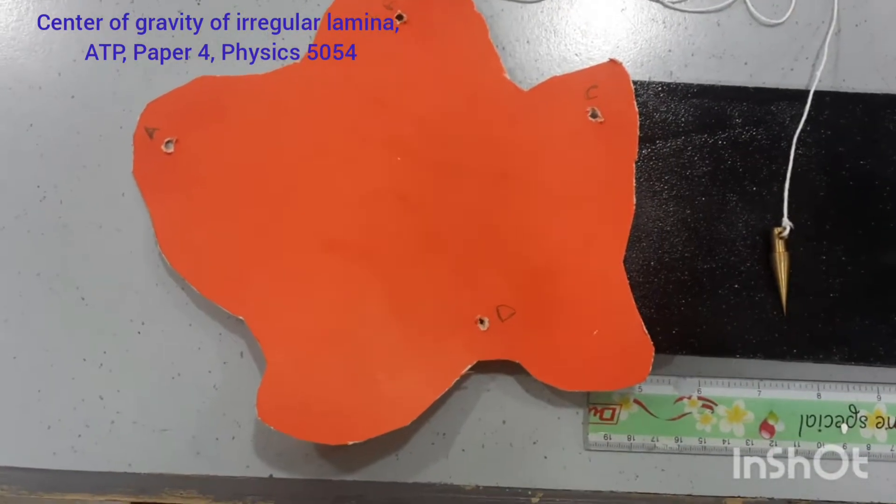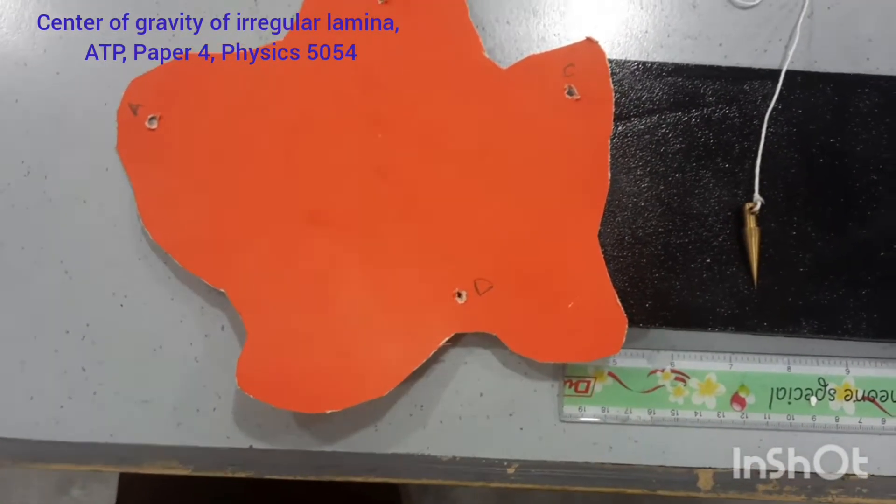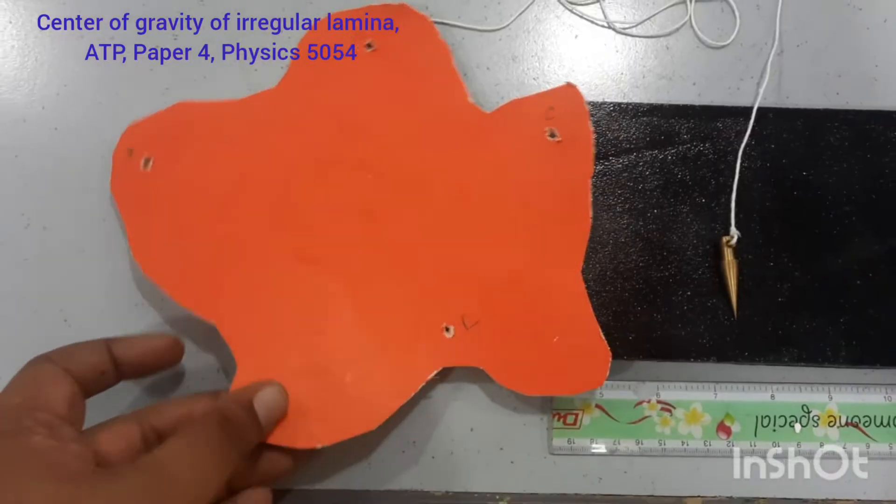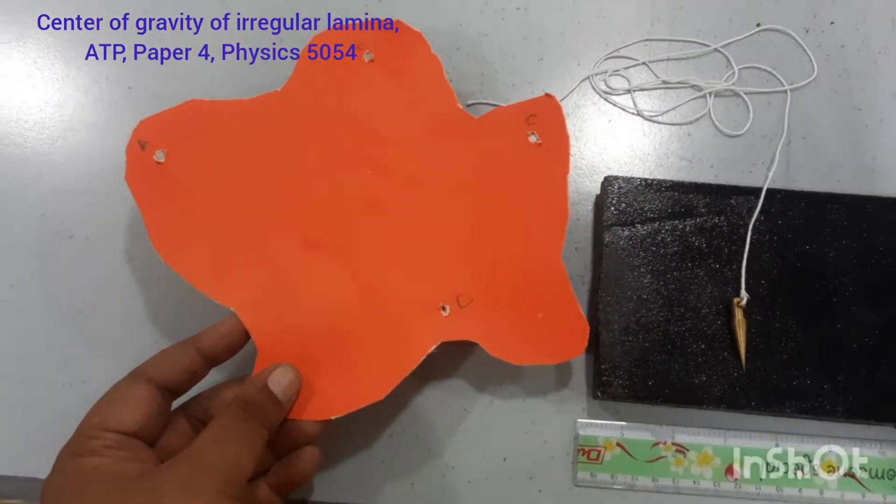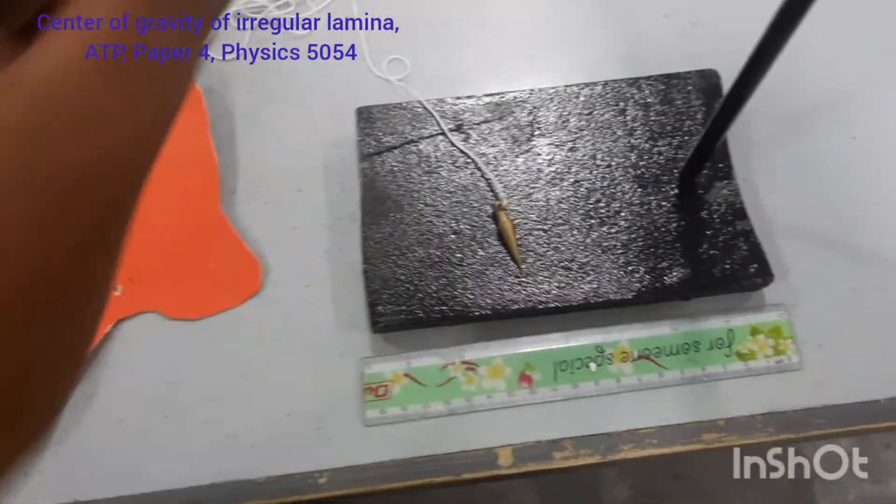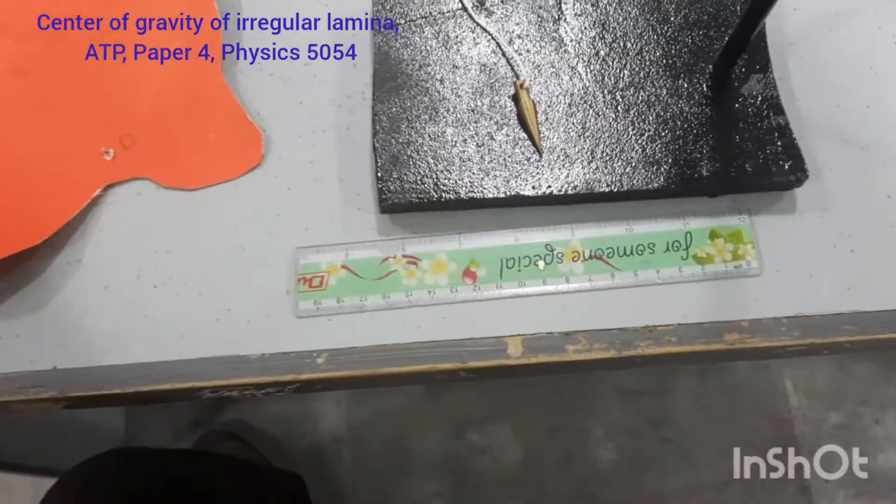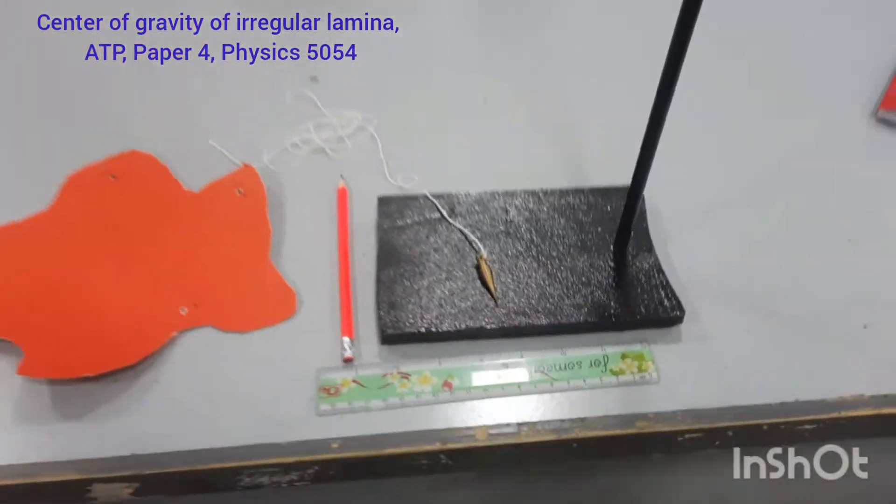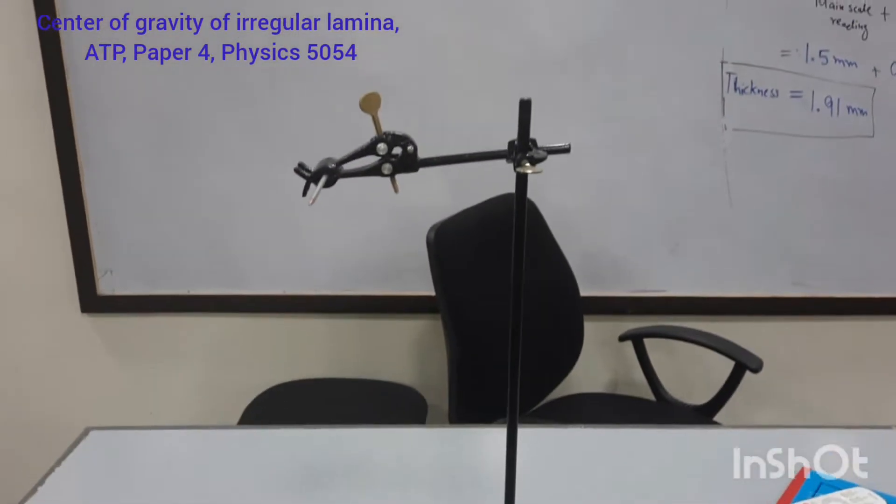The procedure for this is very simple. The instruments which you require is a lamina which is irregularly shaped, we need a plumb line and we need a scale, a pencil, and we need a retort stand.